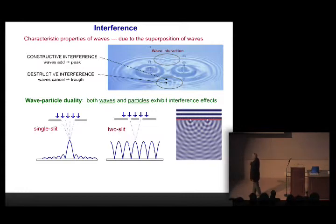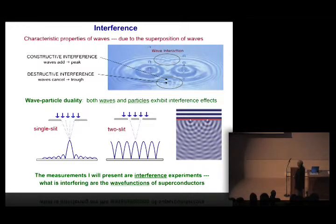Now, it turns out that waves interfere, but so do particles. And some very important experiments in the early 1900s indicated that when you shoot electrons or protons or baseballs at slits, they also interfere in this pattern. So this is important because the measurements I'm going to talk about today are really interference experiments. And what is actually interfering are the wave functions of the particles that make up the superconductor. Okay. So with that, I guess, introduction, let me start at the beginning of the story.